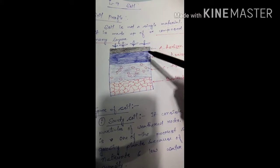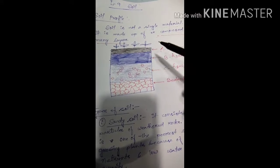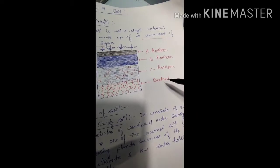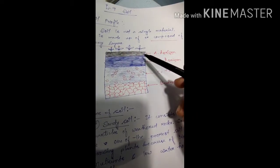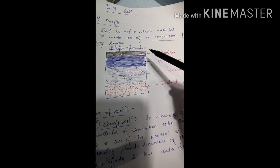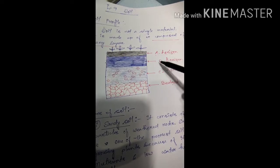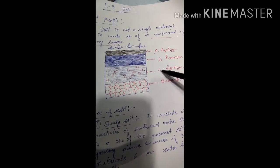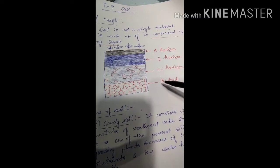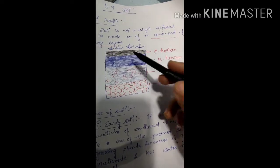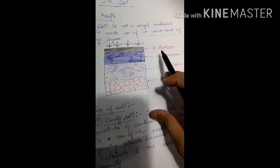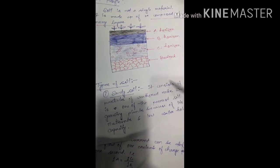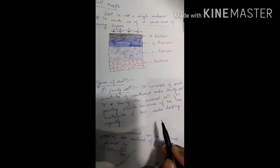To summarize: a soil profile is basically composed of four layers — A horizon, B horizon, C horizon, and Bedrock. A horizon is the topmost, B horizon is between A and C, then C horizon, and finally the bedrock at the bottom. These are the four different layers of a soil profile.